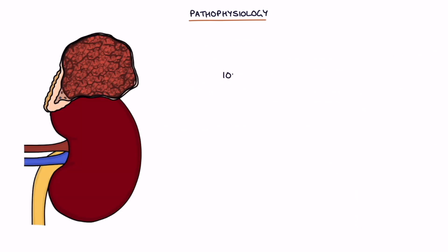There is a 10% rule to describe the pattern of tumours. 10% are bilateral, 10% are cancerous, and 10% are outside the adrenal gland.